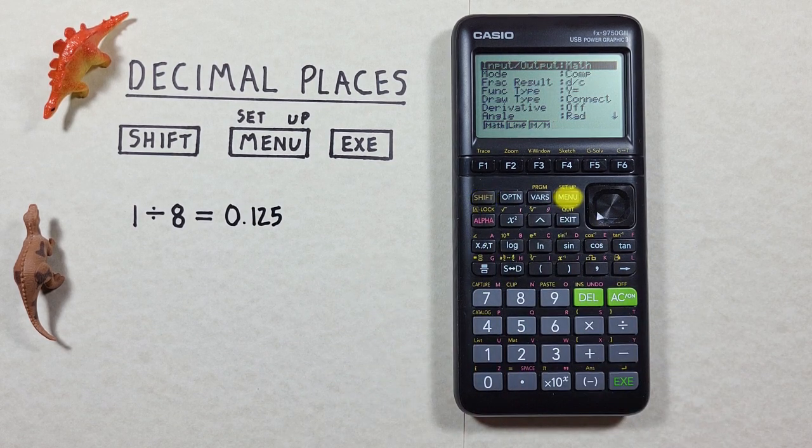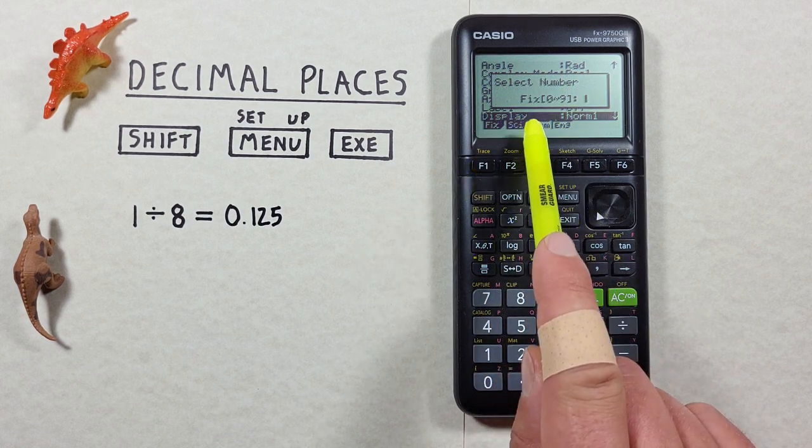Well to do that we can press shift menu which brings us to this screen here, and if we scroll down until we see display, typically our display is set to norm one, but if we choose fix or F1 here we can set the number of decimals that are displayed.